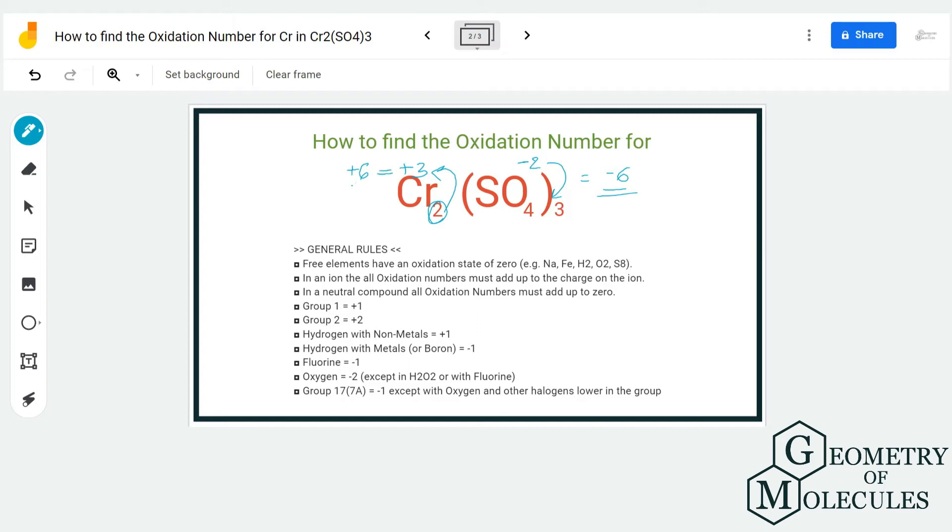This means that chromium in Cr₂(SO₄)₃ has 3 as its oxidation number. Now you can apply the same formula and find out the oxidation number of other atoms as well. For example, if we consider sulfur, we do not know the oxidation number of sulfur in this compound.